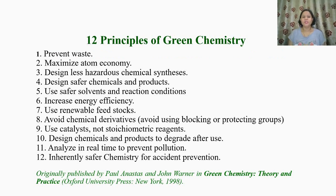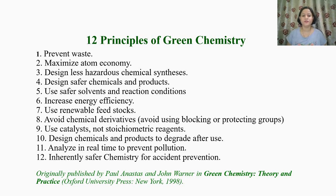There are 12 principles of green chemistry. The first is prevent waste. Second, maximize atom economy. Third, design less hazardous chemical synthesis. Fourth, design safer chemicals and products. Fifth, use safer solvents and reaction conditions. Sixth, increase energy efficiency. Seventh, use renewable feedstock. Eighth, avoid chemical derivatives. Ninth, use catalysts, not stoichiometric reagents. Tenth, design chemicals and products to degrade after use. Eleventh, analyze in real time to prevent pollution. Twelfth, inherently safer chemistry for accident prevention. These 12 principles were postulated by Paul Anastas and John Warner and published in their book Green Chemistry: Theory and Practice in 1998.